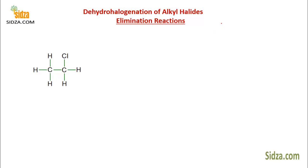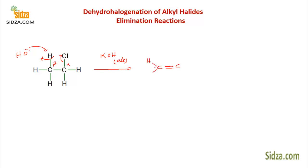Dehydrohalogenation of alkyl halides is an elimination reaction. If you react the alkyl halide with potassium hydroxide KOH in alcoholic medium, the hydroxide ion acts as a strong base and takes a proton from the beta carbon — this is our alpha and this is our beta carbon. The hydrogen is lost with the hydroxide, and the chlorine is also eliminated, giving you a carbon-carbon double bond. You get an alkene, water, and potassium chloride.